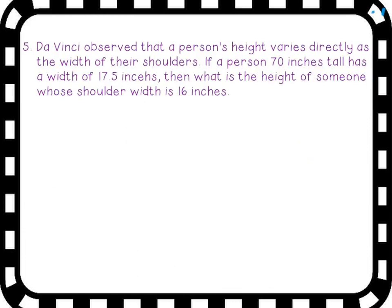Number 5 is another situation where we're comparing a person's height with their width of their shoulders. And I did have a misspelling here. So the height varies directly. So height comes first. So that takes the place of y. And so my ratio is going to be h over w.